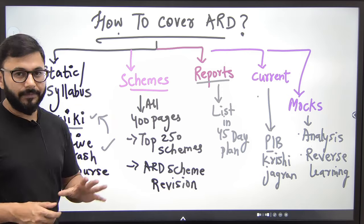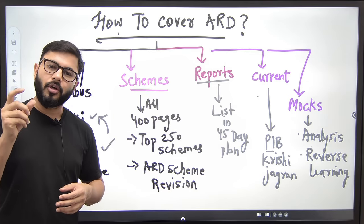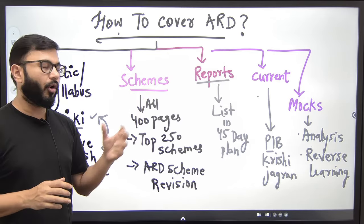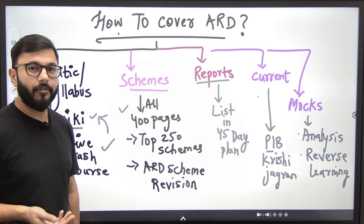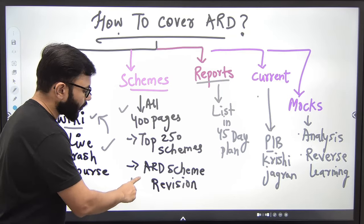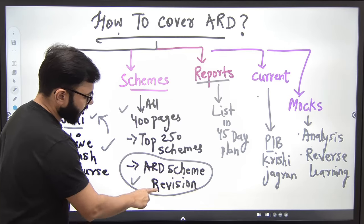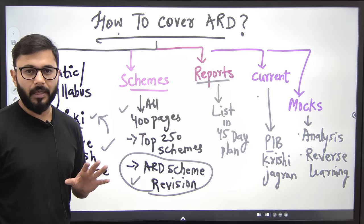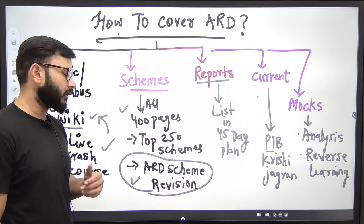The second aspect is schemes, which of course takes a lot of space. Around 40-50% is the element of schemes, so this is again a very important area. Should you study all government schemes or only the important ones? Should you study only agriculture and rural development schemes? First of all, if you want to cut short your preparation, a revision of all ARD schemes has already been done by Manish sir. It's there on YouTube on my channel — he did it very recently. You can see it there.